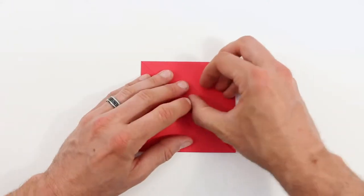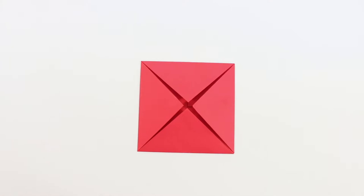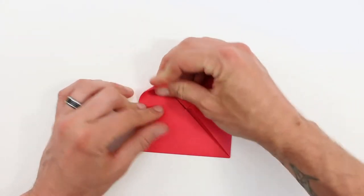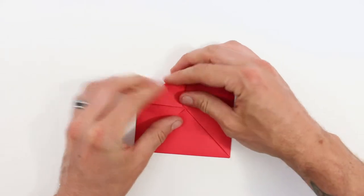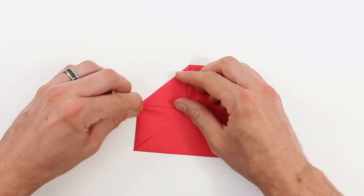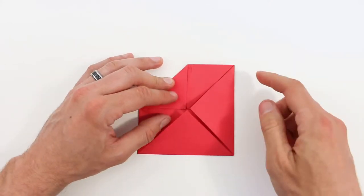Now make sure you've creased everything firmly. Then we're going to make another blintz fold. So we'll bring each of these four corners into that center again. The paper starts to get a little thick here. We'll just crease it firm all the way through.